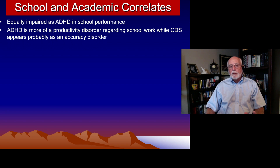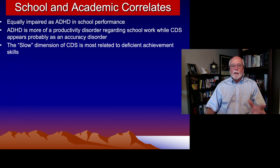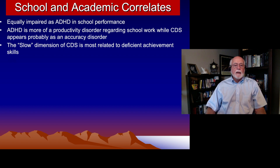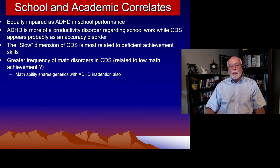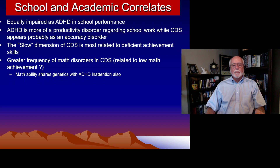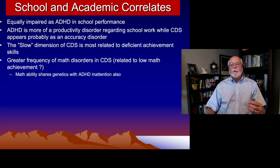These findings aren't definitive, just suggestive, but they suggest that the nature of academic impairment differs between the two conditions. The slower, sluggish motor dimension of CDS seems to be most related to deficient academic skills — whereas in ADHD it's the inattentive dimension that is linked to worse school performance. A couple of studies suggested that CDS was associated with more difficulties in mathematics achievement, with math ability being more impaired by the daydreamy, spacey confusion — the attention dimension — than we see in ADHD.